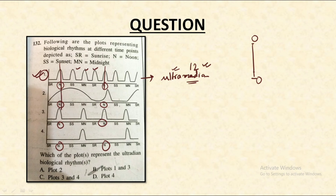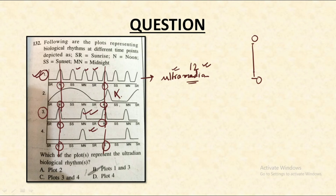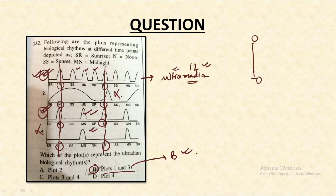In the second plot there is no symmetry, so we eliminate that option. In the third plot the cycle is getting repeated between two noons, so plot three is also representing an ultradian rhythm. In the fourth plot, the cycle is not getting completed in less than 12 hours, so the fourth is also not correct. Therefore, plot one and plot three represent the ultradian biological rhythms, and this corresponds to option B — which is the correct answer.